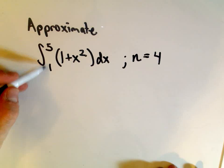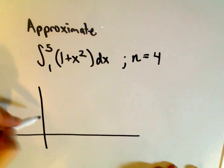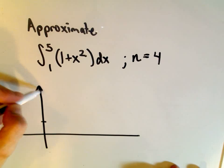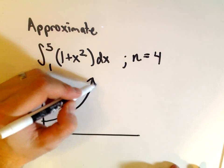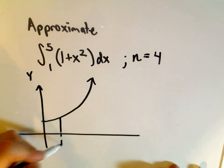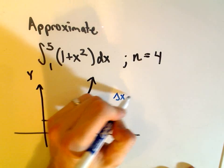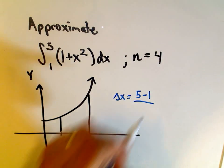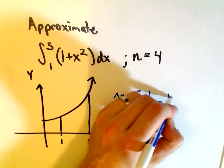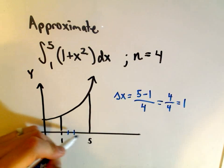So it says we want to approximate the integral from 1 to 5 of 1 plus x squared, and I'm going to use 4 trapezoids. If you were to graph 1 plus x squared, so I'm just going to draw a little picture here. 1 plus x squared would be a parabola shifted up one unit from x equals 1 to x equals 5. And it says we're going to chop this up into n pieces. Delta x is going to have value b minus a, so that's the right point minus the left end point, divided by the number of rectangles. So we'll get 4 over 4, or 1. So that's the width of each one of our intervals.